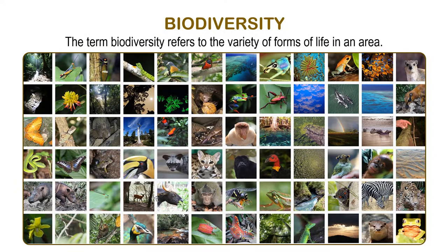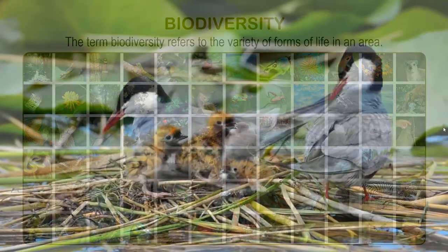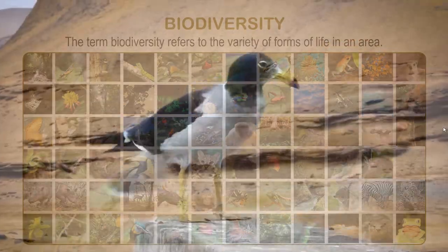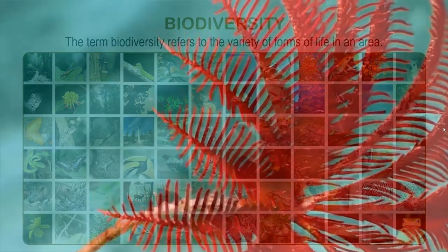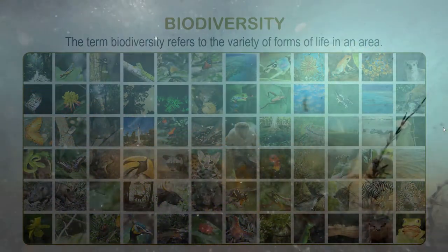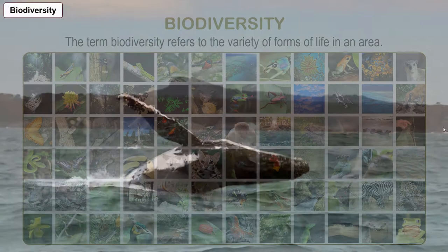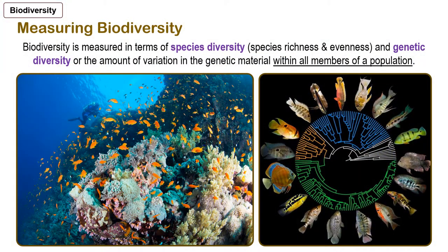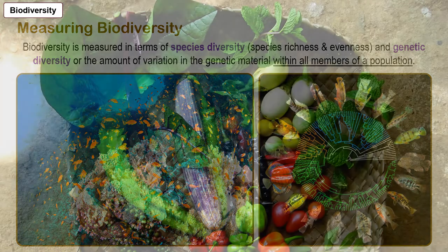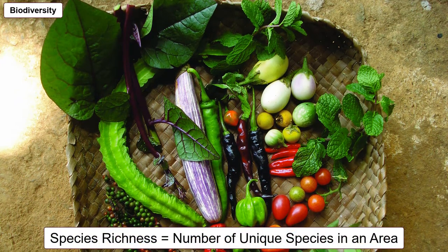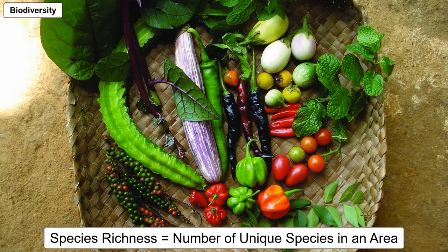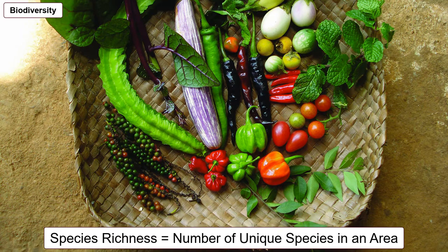Now let's look at biodiversity, which refers to the variety of forms of life in an area. This collage is simply an understatement — there are more than 8 million known species on this planet. What more if we include the unknown and the things we will engineer in the future? New species. Of course, speciation is an evolutionary process and it takes a lot of time, but who knows, we can also hasten evolution. One measure of biodiversity is species diversity, which is reflected by both species richness and species evenness. Species richness refers to the number of unique species within an area, and this kind of diversity is easiest to notice and is most often what is meant when we refer to the term biodiversity.